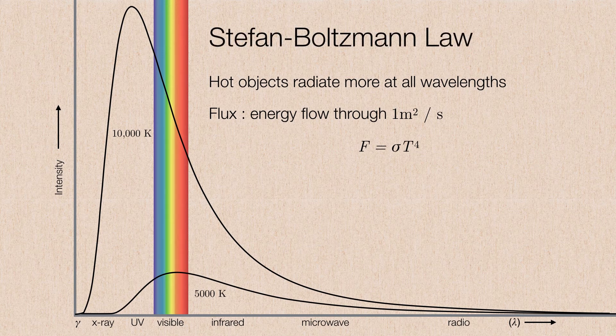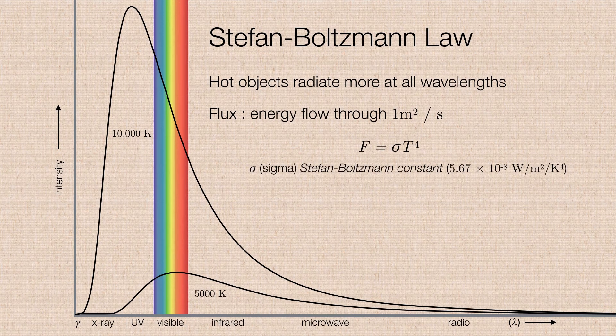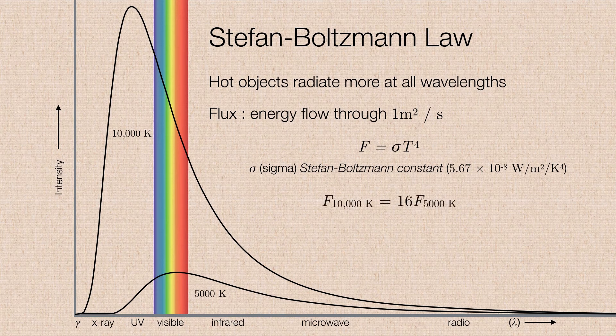This is called the Stefan-Boltzmann law. The Greek letter sigma is the Stefan-Boltzmann constant. The thing to consider in this example is the object that is at 10,000 Kelvin is twice the temperature of the 5,000 Kelvin object. That means that the flux out of a 10,000 Kelvin object is 16 times the flux of the 5,000 Kelvin object. Why? Because 2, in this case it's a factor of 2 in temperature, 2 raised to the fourth power is 16. So even a slight increase in temperature results in a huge increase in flux.